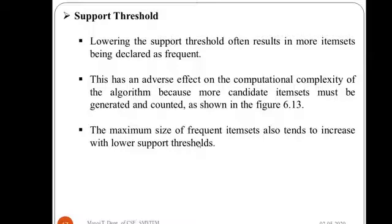Lowering the support threshold often results in more item sets being declared as frequent. This is very obvious — it is like how if we lower the pass percentage then more students will pass the exam. In the same way, if we lower the support threshold, more item sets will be declared as frequent. This has an adverse effect on the computational complexity of the algorithm because more candidate items must be generated and counted.